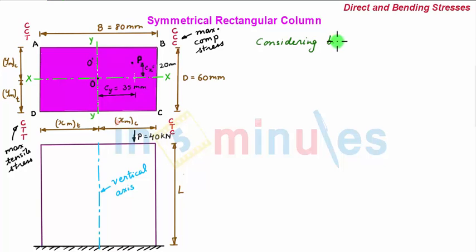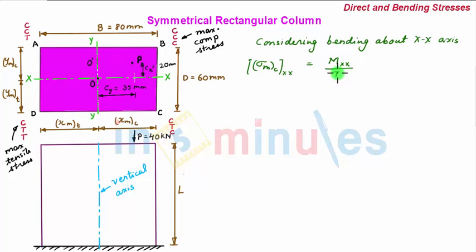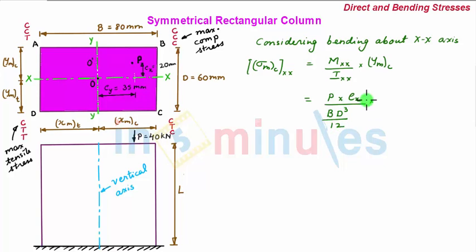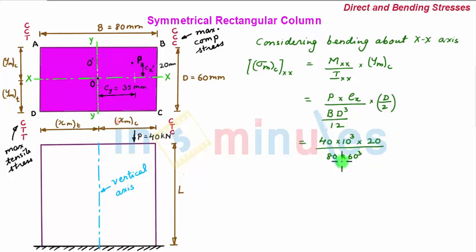Considering bending about xx-axis, sigma_max in compression equals M_xx divided by I_xx multiplied by ymax in compression. M_xx equals P × ex; I_xx equals bd³/12; and ymax in compression equals d/2. Substituting: 40 × 10³ × 20, divided by (80 × 60³/12), multiplied by (60/2).